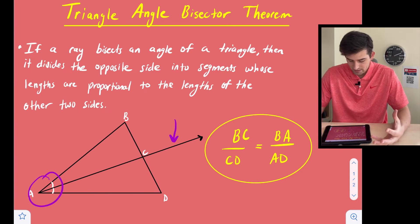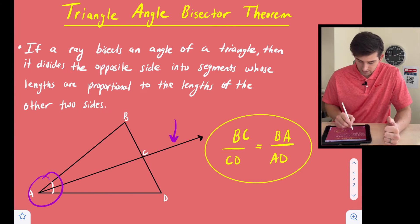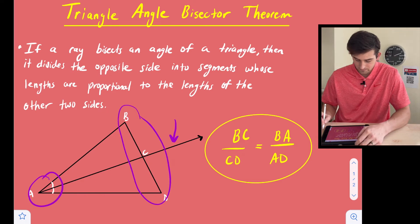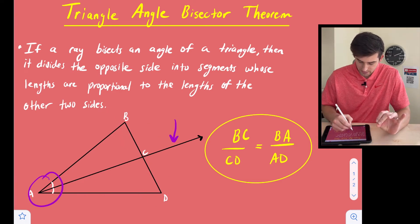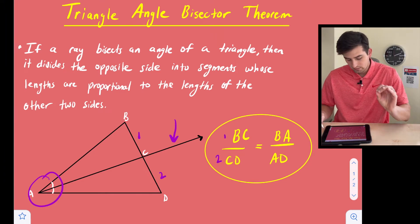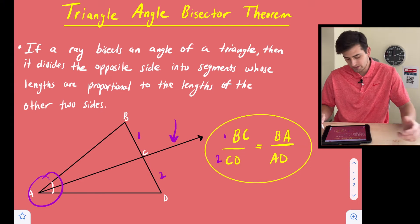So then it says it divides the opposite side. So here's our opposite side, B, D. So it divides it into segments whose links are proportional. So here we see B, C over C, D, right? B, C over C, D, proportional to the links of the other two sides of the triangle.